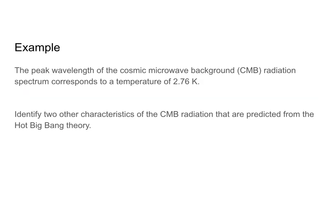Let's go ahead and look at an example. The peak wavelength of the cosmic microwave background radiation spectrum corresponds to a temperature of 2.76 Kelvin. Identify two other characteristics of the CMB radiation that are predicted from the Hot Big Bang Theory. This is a two-mark question. Go ahead and pause the video, take a moment, answer the question, and then restart the video and go through the mark scheme with me.